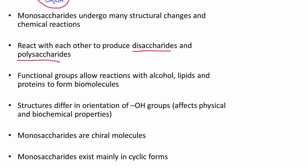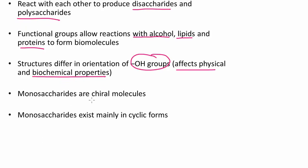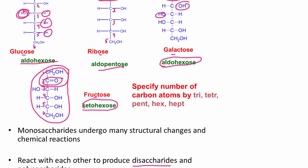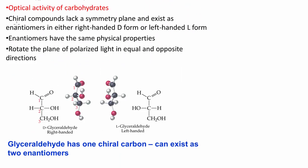Functional groups allow reactions with alcohols, lipids, and proteins to form biomolecules. The structures only differ in the orientation of the OH groups, and this orientation is important — it affects both the physical and biochemical properties. Monosaccharides are what we call chiral molecules, and they exist mainly in cyclic forms. Chiral compounds lack a symmetry plane and exist as enantiomers. As far as these carbohydrates go, they exist either in a right-handed D form or a left-handed L form.